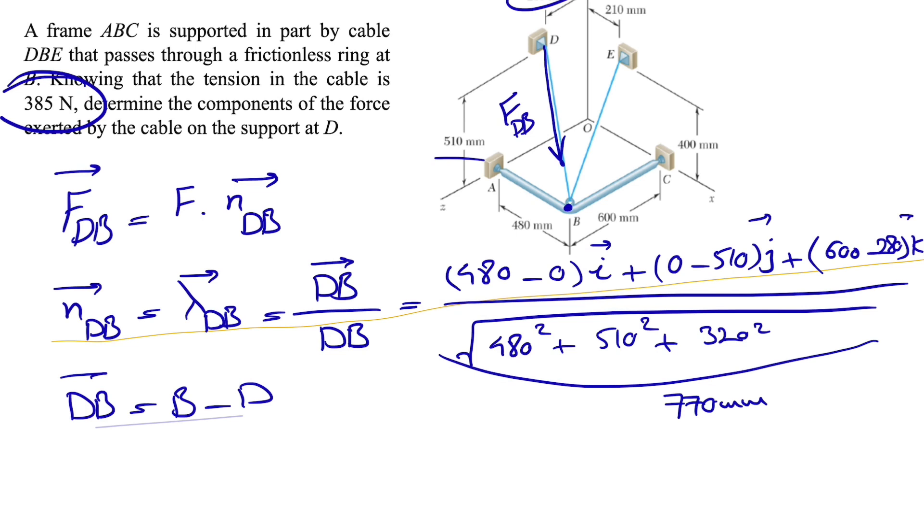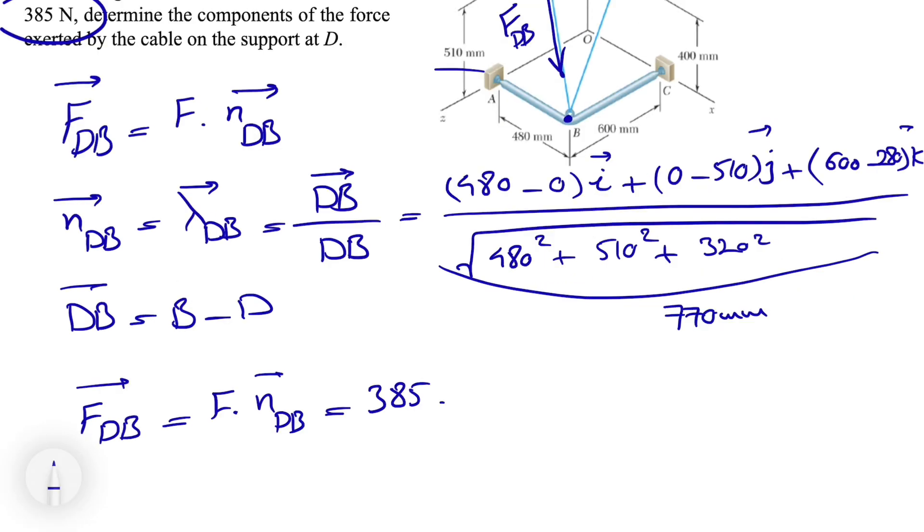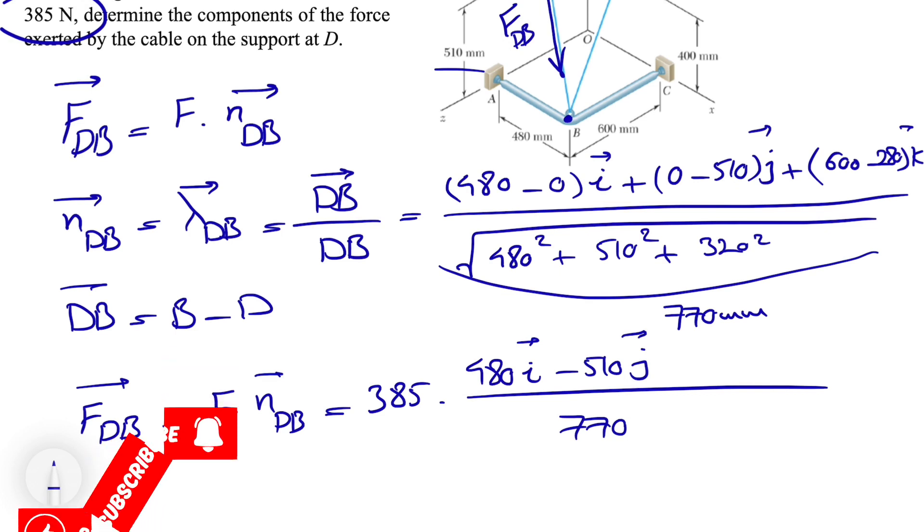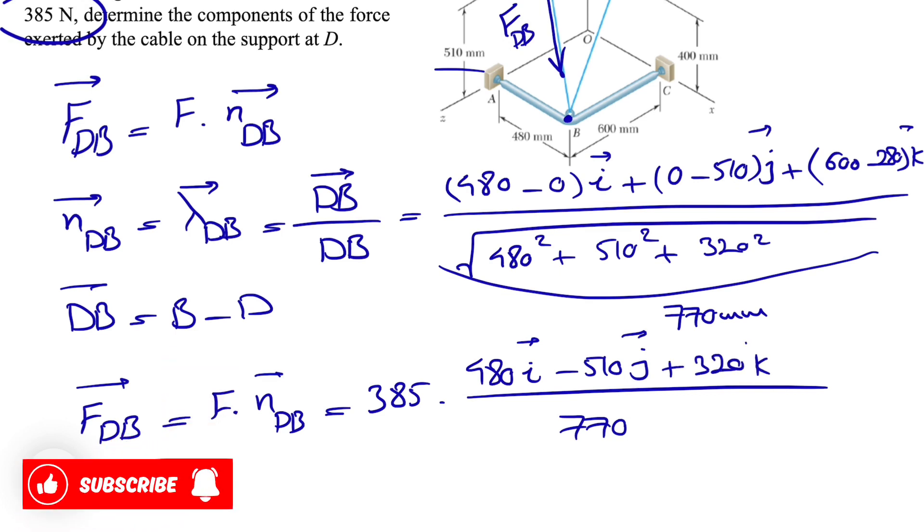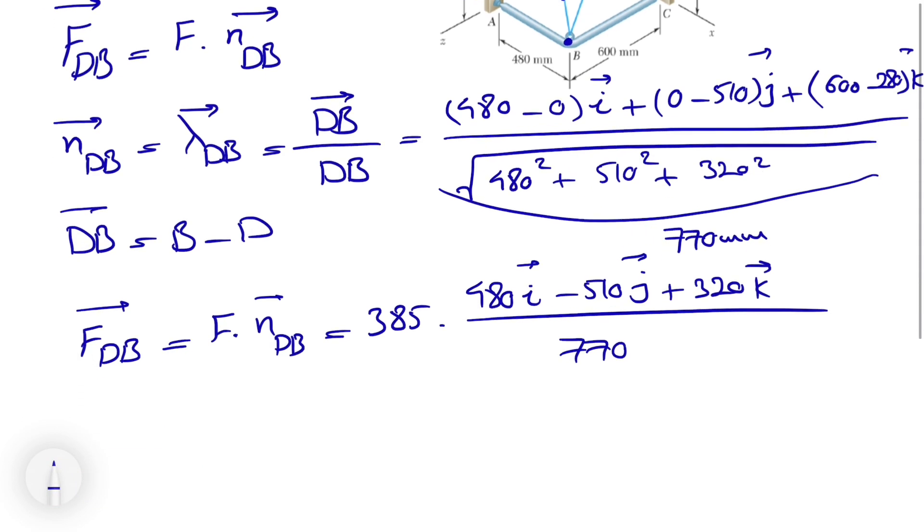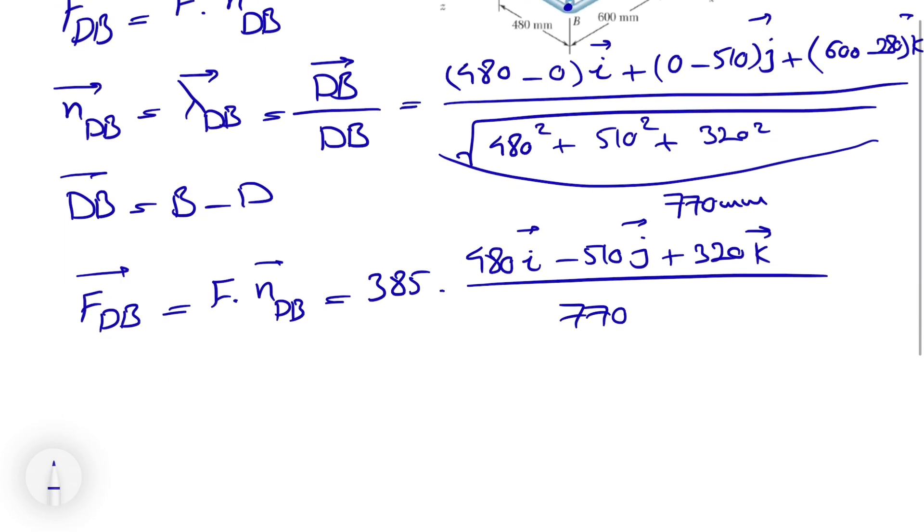For finding F_DB we have F times the unit vector. From the question we know F is 385. What we have for the unit vector is 480 for i, minus 510 j, and 320 k, all divided by 770.